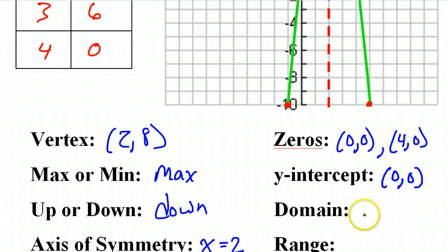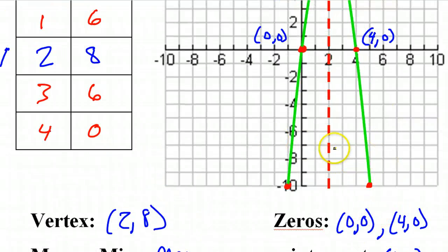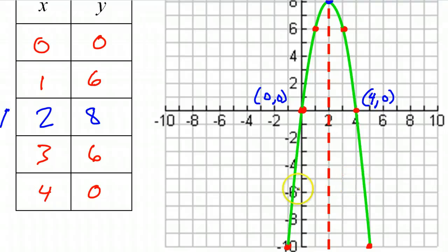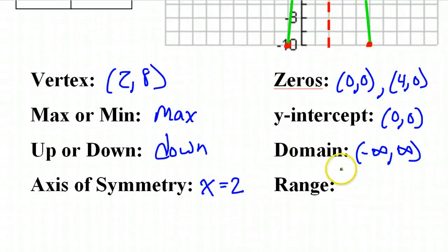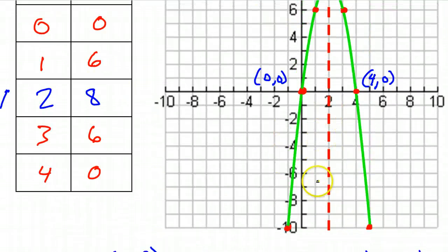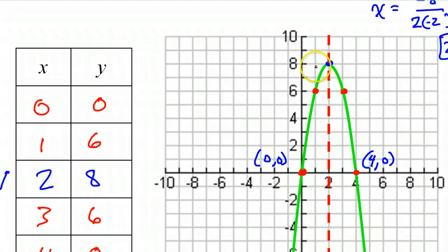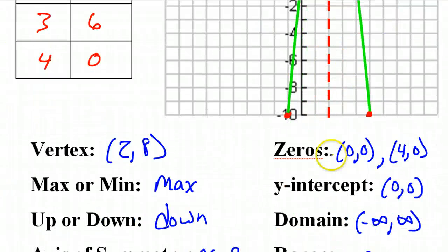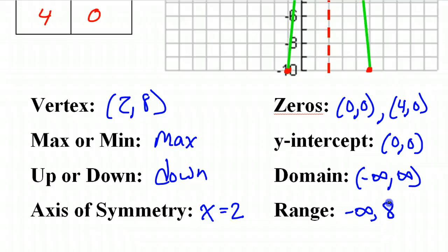The domain is going to be negative infinity to positive infinity, because the domain is the x-values and this graph goes left forever and right forever. The range is the y-values — this graph goes from negative infinity at the bottom all the way up to 8 at the top, so negative infinity to 8.